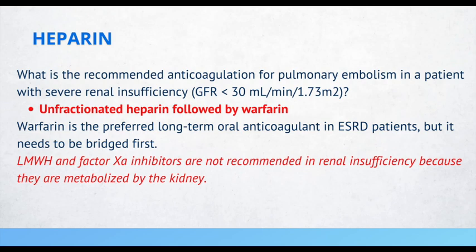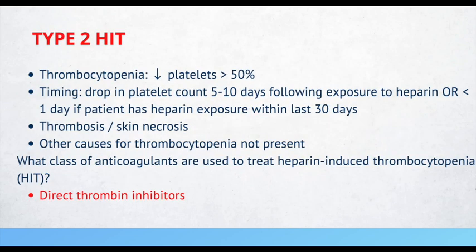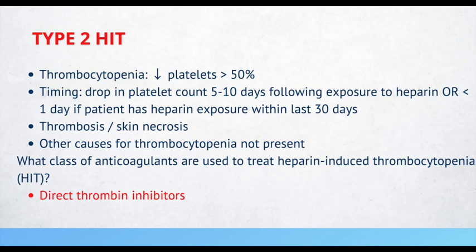If a patient presents with thrombocytopenia — namely platelets decreased by greater than 50% — with a drop in platelet count 5 to 10 days after heparin exposure, plus thrombosis or skin necrosis, and other causes are not present, think about type 2 HIT. Examiners may show two CBC results five days apart with a massive dip in platelets. The class of anticoagulants used to treat HIT is direct thrombin inhibitors.